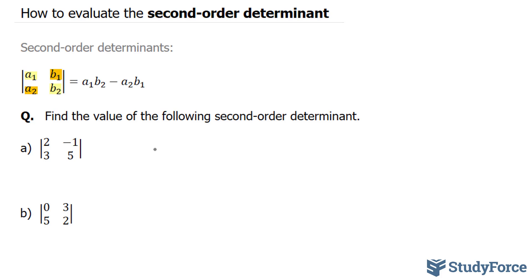So let's go ahead and do that. 2 times 5, this is our a1 and this is our b2, minus 3 times negative 1. 2 times 5 is 10. And negative 3 times negative 1 is positive 3. And this gives us 13.